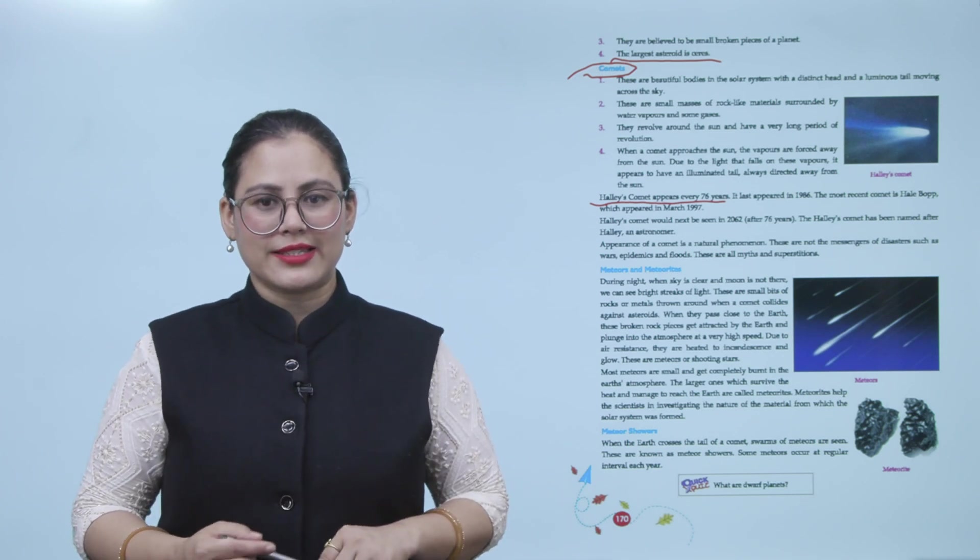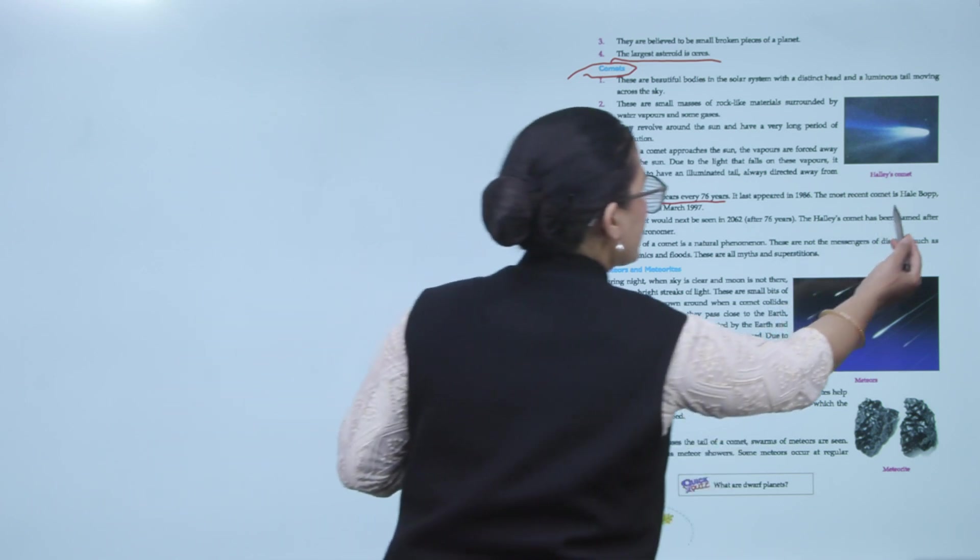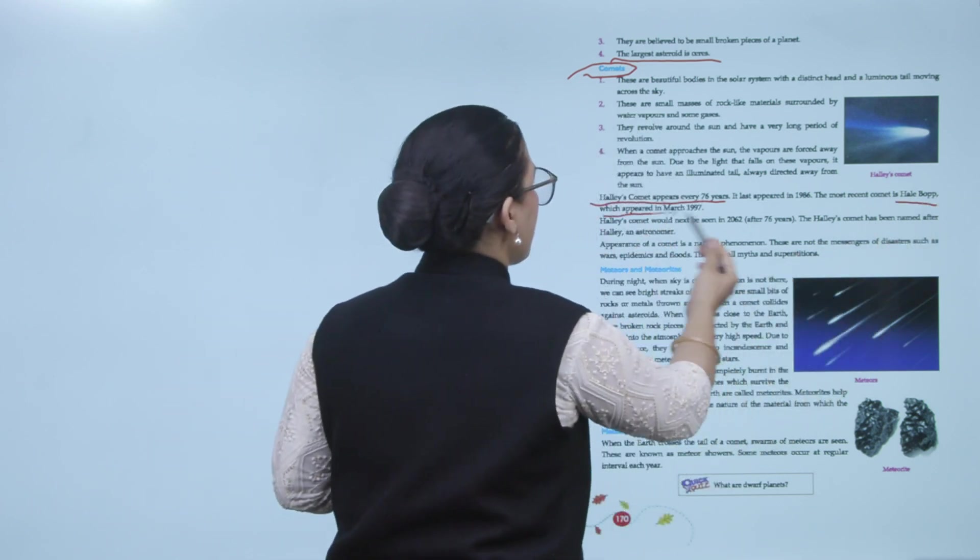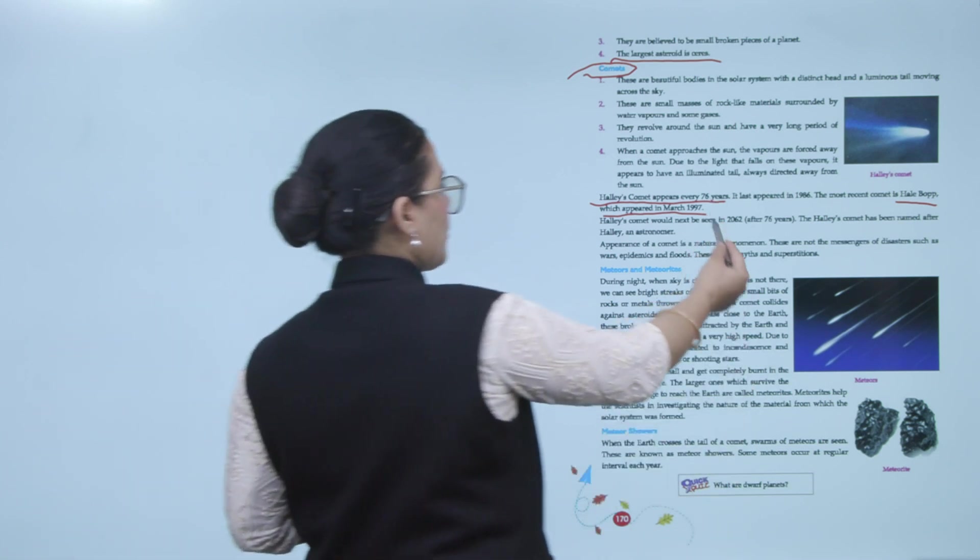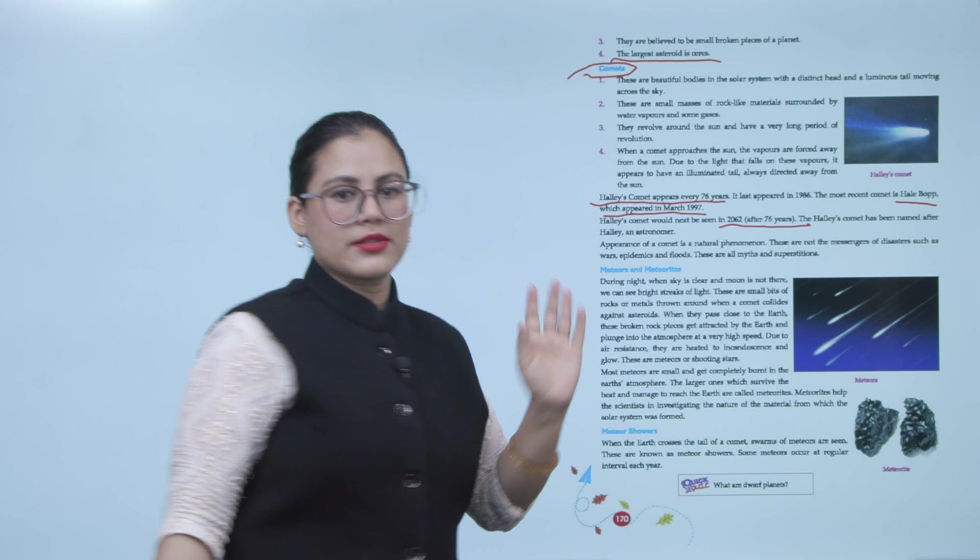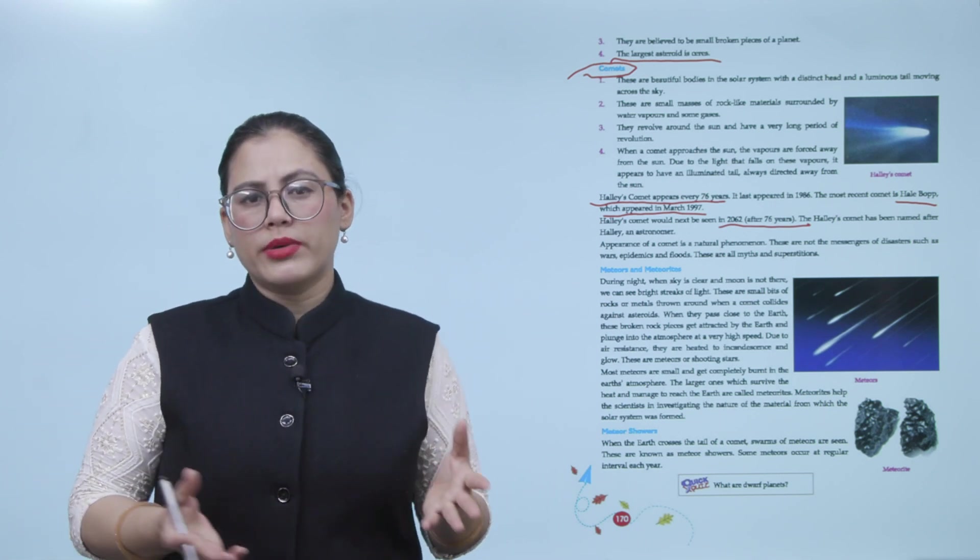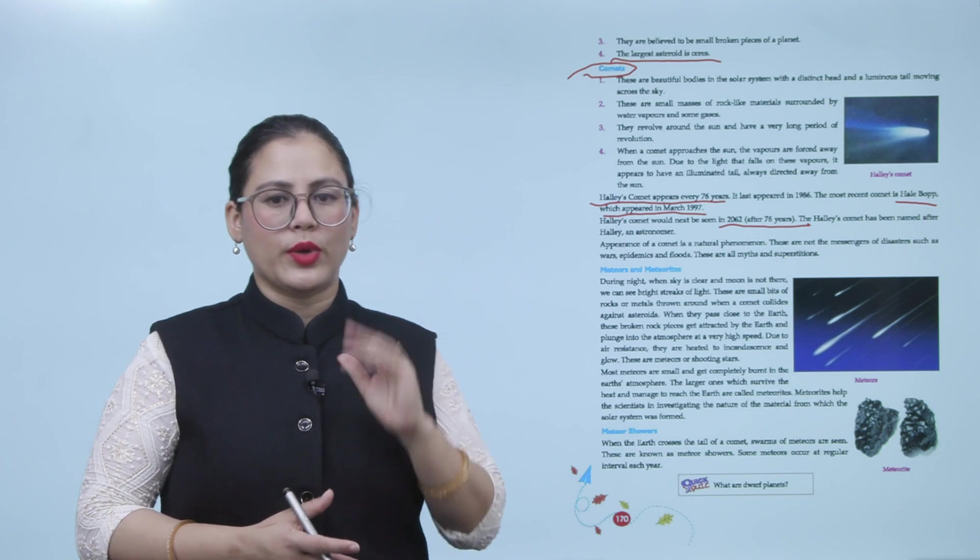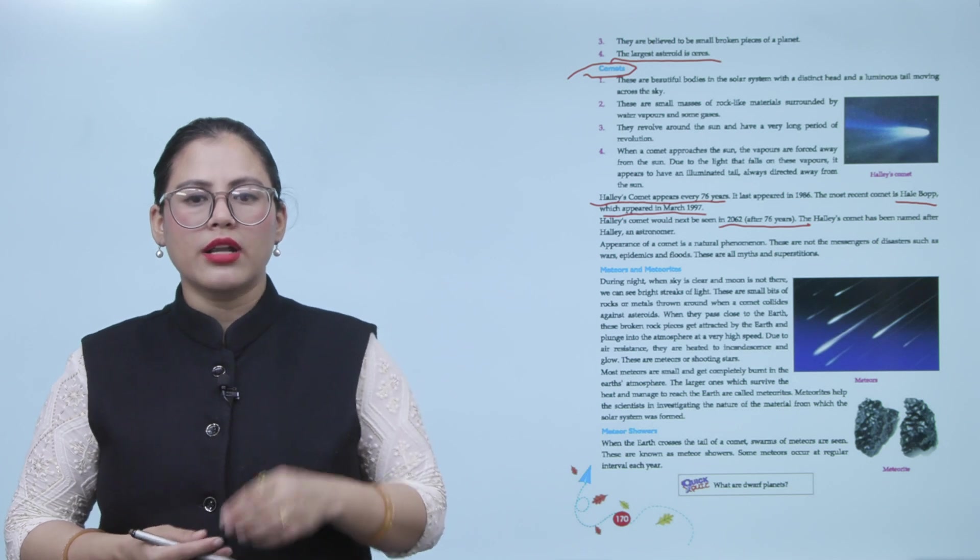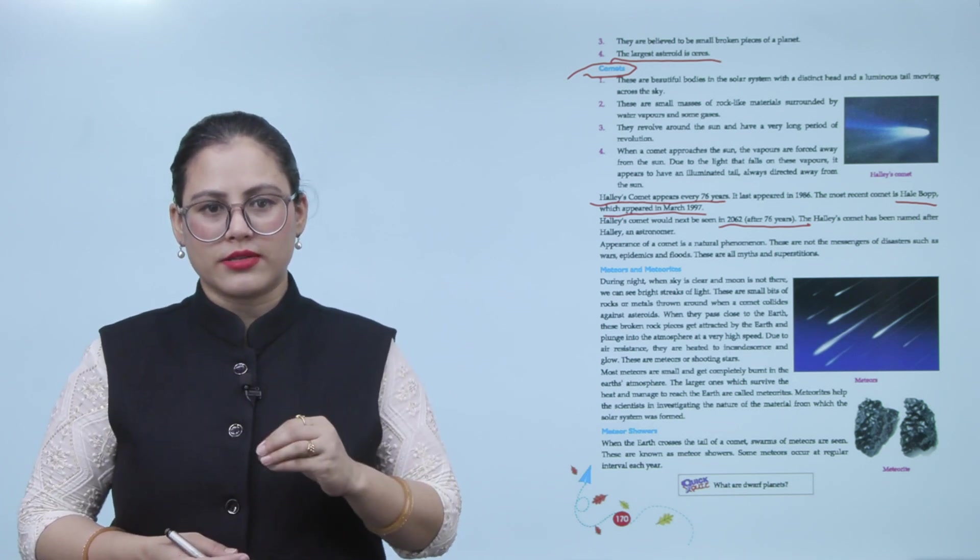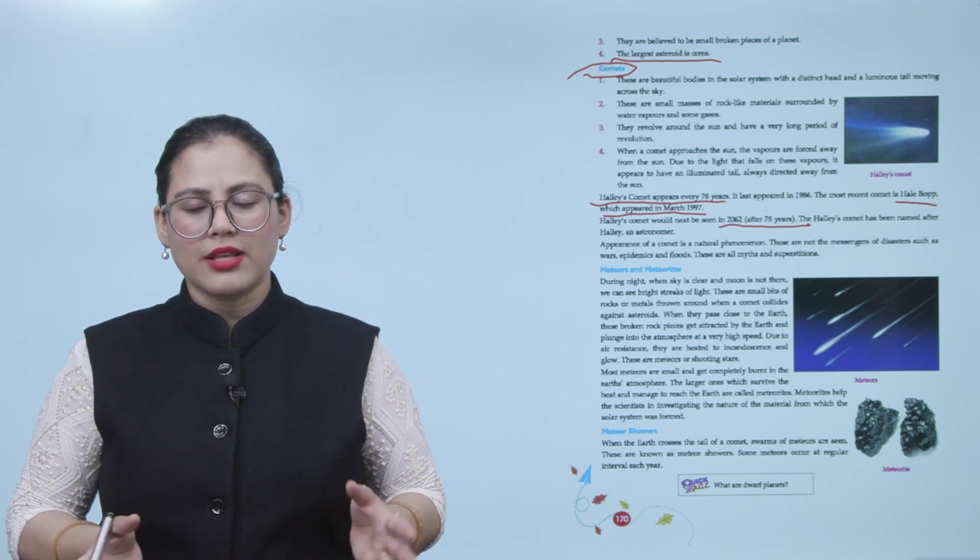Halley's Comet, which is a very famous comet, appears every 76 years. It last appeared in 1986. The most recent comet is Hale-Bopp, which appeared in March 1997. Halley's Comet would next be seen in 2062, after 76 years. The Halley's Comet has been named after Halley, an astronomer. Appearance of a comet is a natural phenomenon. These are not the messengers of disasters such as wars, epidemics, and floods. These are all myths and superstitions.